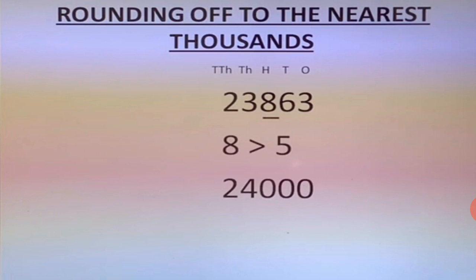Therefore twenty three thousand eight hundred sixty three will be rounded off to twenty four thousand. Similarly we can round off numbers to the ten thousand place, lakh, or ten lakh place. The rule remains the same.